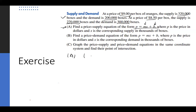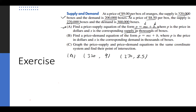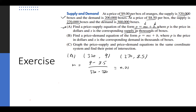We're given that when supply x equals 320 (in thousands), the price is $9 — that's one data point. We also have a second data point where a different supply corresponds to another price. With these two points, we can solve for the slope m by taking the difference of the y-coordinates divided by the difference in x-coordinates, which gives m = 0.01.